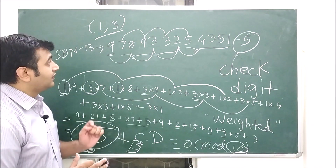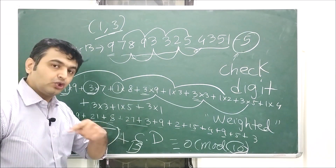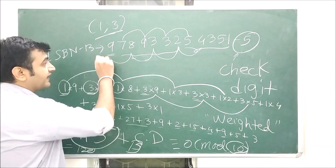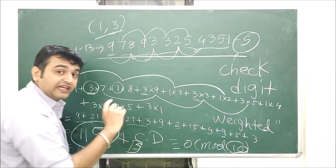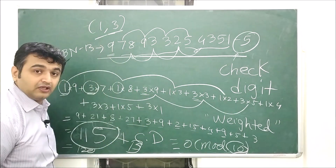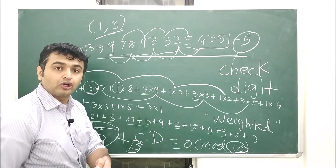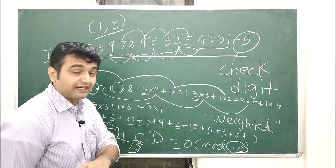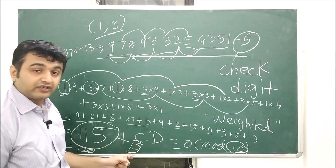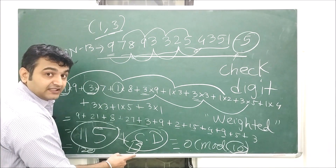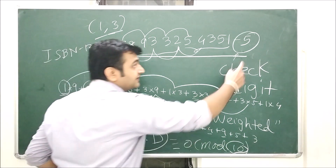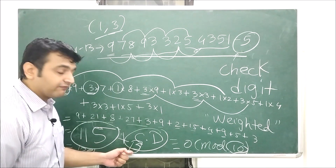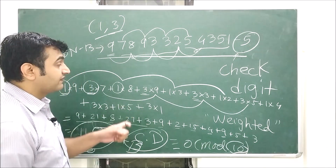The same thing works for a UPC code — Universal Product Code. If you take any product from a grocery or general store with a 13-digit barcode, the same 1-3 algorithm will work. So if you have a book or any product near you, just pick it up, apply this algorithm, find the check digit, and it should match the last digit on the barcode. That is an exercise I would suggest you try.